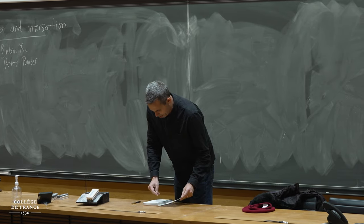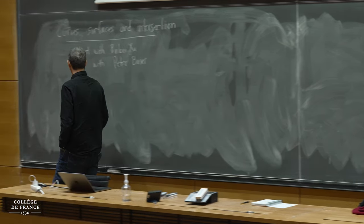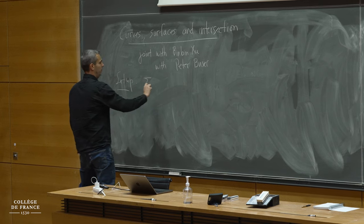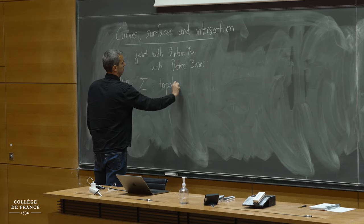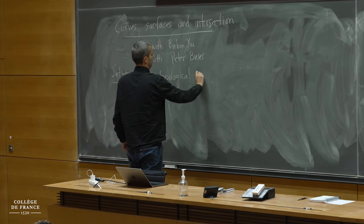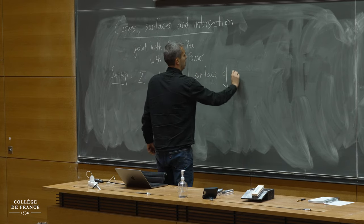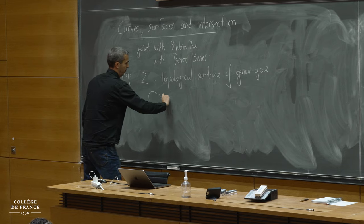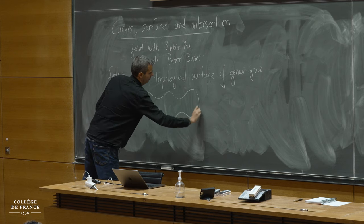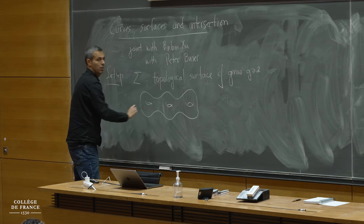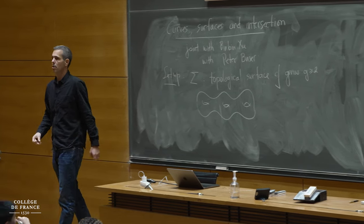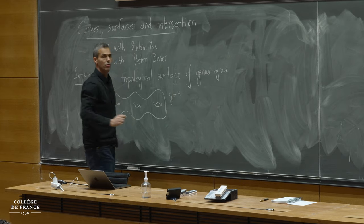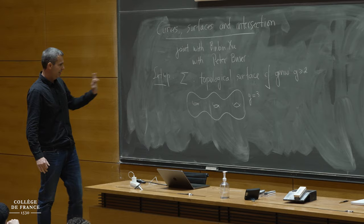My goal for the talk is to try to explain this picture and to understand in some sense the space of all closed curves on a surface. Throughout, I'm going to look at a topological surface of genus g greater than or equal to two. The genus is the number of tori I'm taking the connected sum of — in this picture here, g equals three. My surfaces will always be closed and orientable unless I say otherwise.